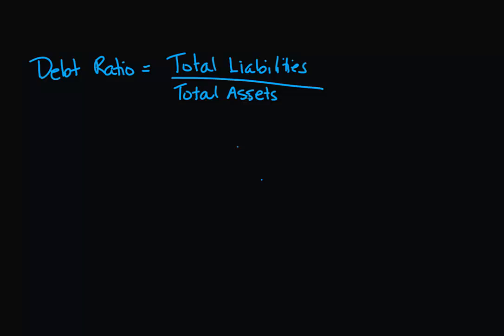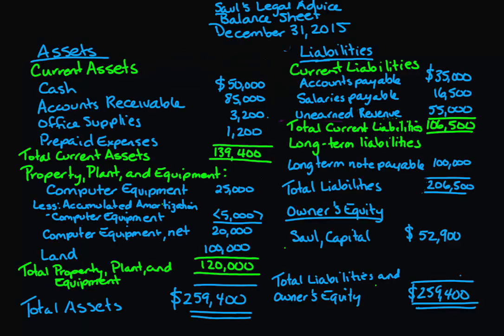Our debt ratio is total liabilities over total assets. If you think about the accounting equation for a moment, let's go back to the balance sheet because it shows our accounting equation. We've got total assets equals total liabilities and owner's equity. So total assets can be financed by two ways: either through debt or through owner's equity, which is made up of the owner's investment in the firm and the firm's profits over time.